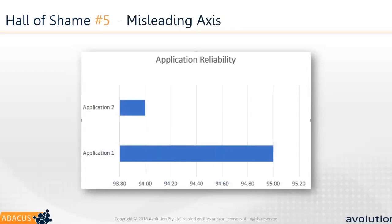Another issue: bar charts that don't start at the origin. This chart shows application reliability — application one at 95% and application two at 94% — but application one appears far more reliable because the bar chart starts around 93%, not zero. That's not a very significant difference and could be down to standard error. Unless showing differences between multiple values, bar charts should always start at zero; otherwise it's very easy — sometimes deliberately — to portray something misleading.